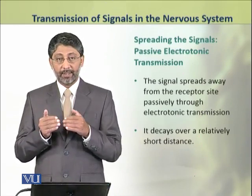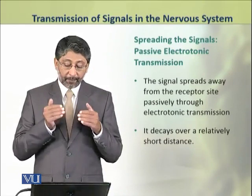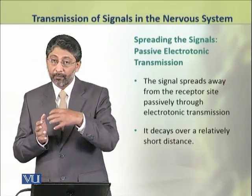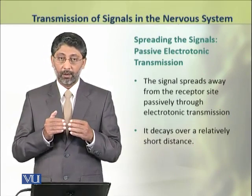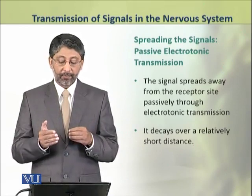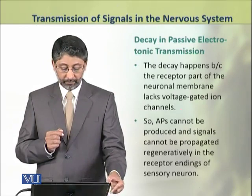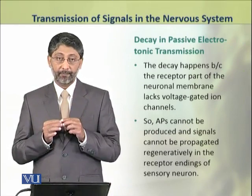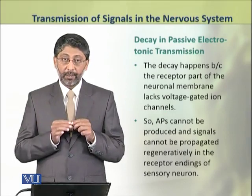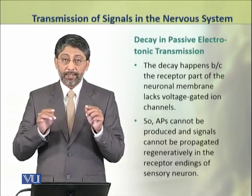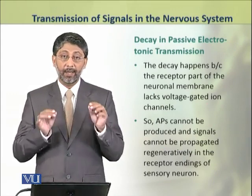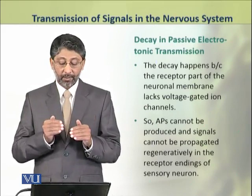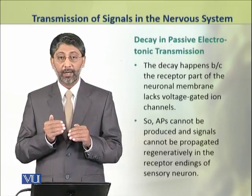After receiving the signal, it spreads away from the receptor site passively through electrotonic conduction to the cell body part of the neuron. However, this signal decays over a relatively shorter distance. The decay happens because of the resistance of the cytoplasm in the cell body, as well as because this part of the neuron does not contain voltage-gated ion channels, so action potentials cannot be propagated or produced here.